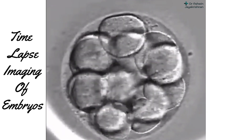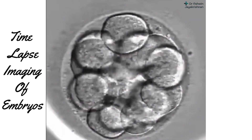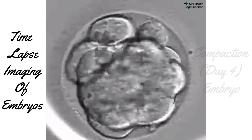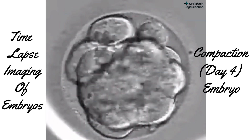Day four is around the compaction stage, which means all the individual cells combine together to form a uniform embryo.